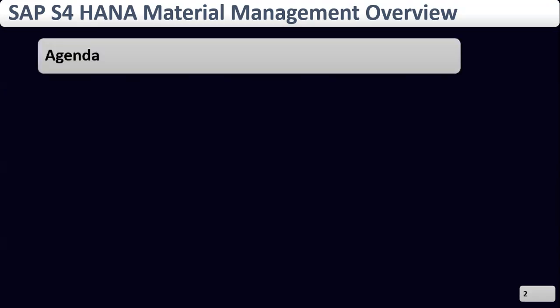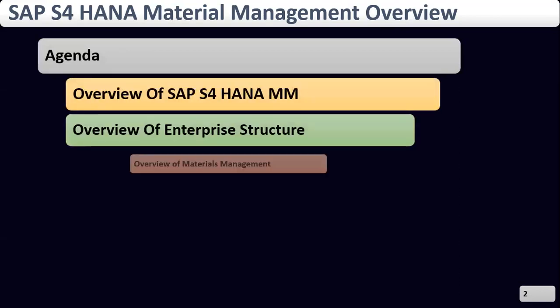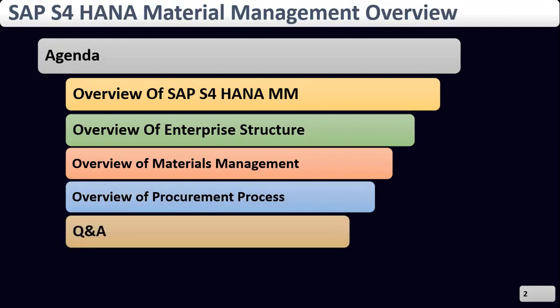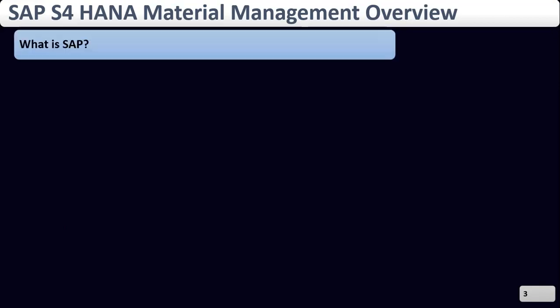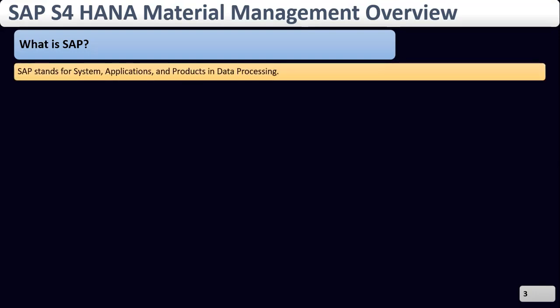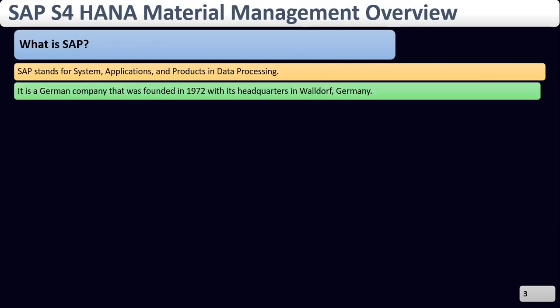Today we are going to discuss the overview of SAP S4 HANA, overview of enterprise structure, overview of Material Management, procurement processes, and finally questions and answers. Now, what is SAP? SAP stands for System Applications and Product in Data Processing.